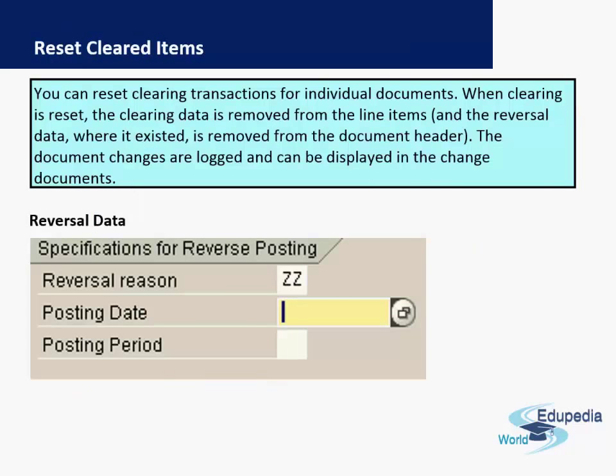You can reset clearing transactions for individual documents. When clearing is reset, the clearing data is removed from the line items, and the document changes are logged and can be displayed in the changed documents.